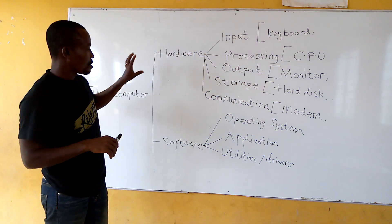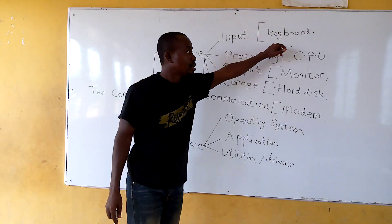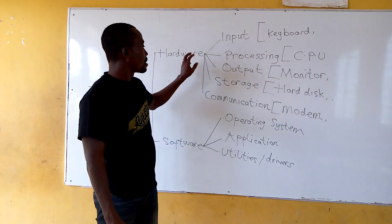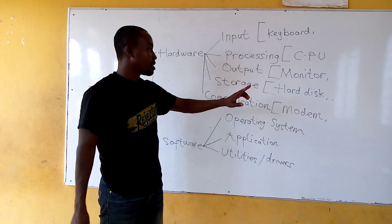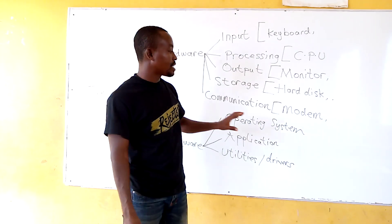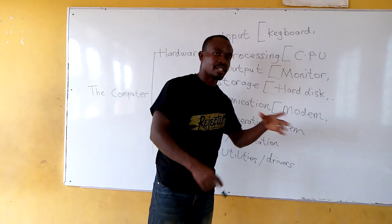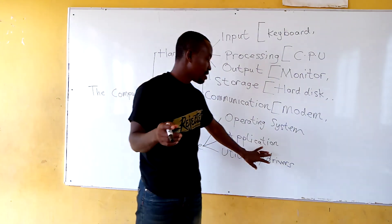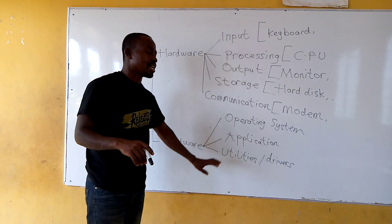Look at this whole diagram and complete it — I haven't completed it. Input: there are so many input hardware examples I haven't completed. Processing: I haven't completed that. Output, storage, communication — I haven't done those. When it comes to the operating system, we will go deep into it. I won't explain all the examples now because there are quite a number of operating system applications, application software, utilities, and drivers with their names. We will take our time and go deep into this very well.